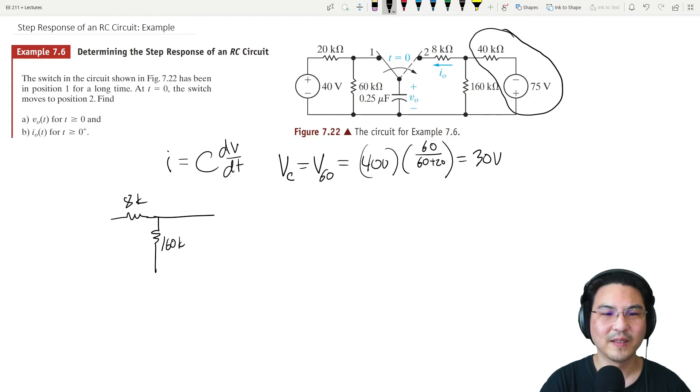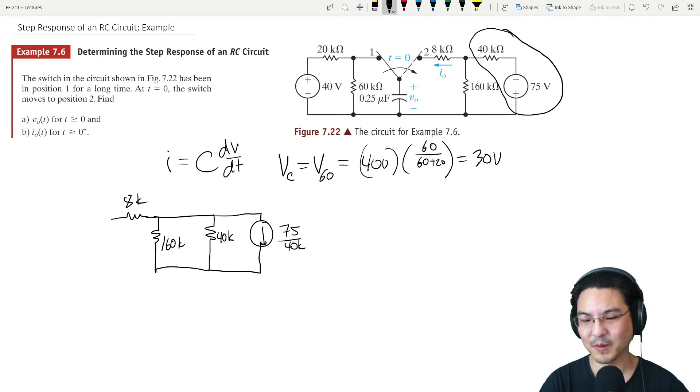We can turn that into just a resistor and a current source in parallel instead of a resistor and a voltage source in series. This stays the same, but the current will be V over R, so 75 over 40k. Let me punch that in the calculator.